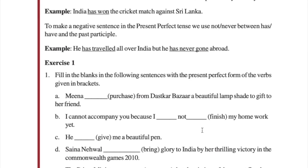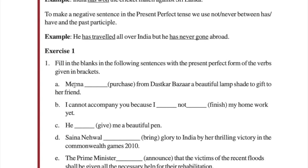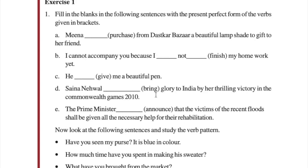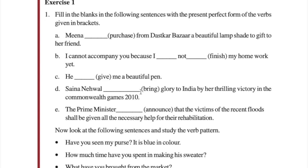Now let us look at the exercise: fill in the blanks with the present perfect form of the verbs given in brackets. The first one is Meena — since she is singular, we use 'has purchased' from Dastakar Bazaar. Next: 'I cannot accompany you because I have not finished my homework yet.' Next: 'He has given me a beautiful pen.' Then: 'Saina Nehwal has brought glory to India by her thrilling victory in the Commonwealth Games 2010.' Finally: 'The prime minister has announced that the victims of the recent floods shall be given all the necessary help for their rehabilitation.'